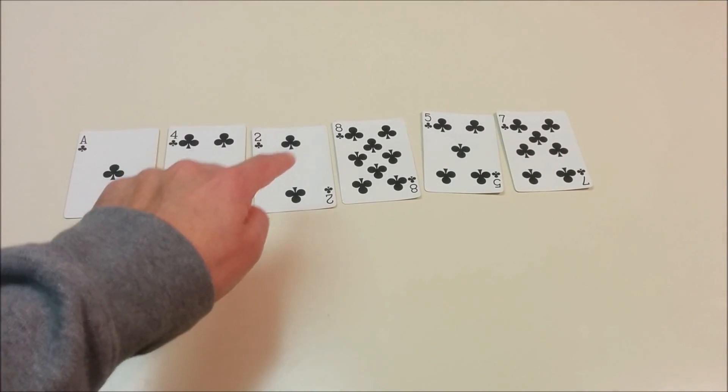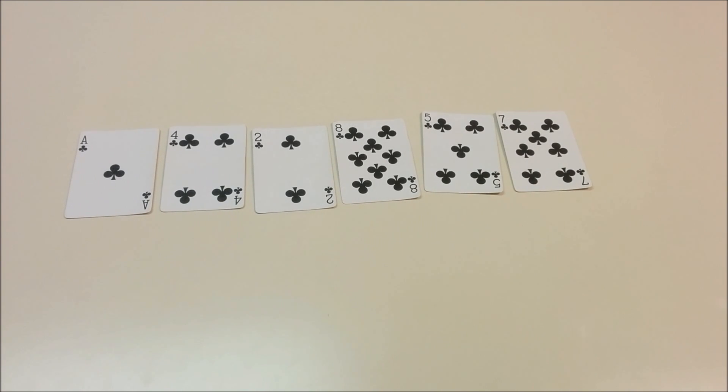This is the decimal representation of 1 over 7. It's these 6 numbers which keep repeating over and over again: 1, 4, 2, 8, 5, 7.